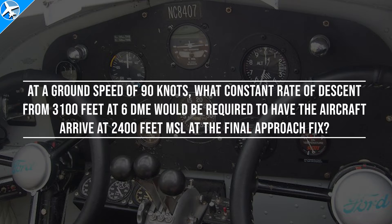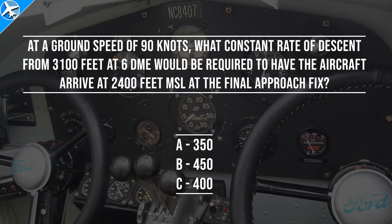At a ground speed of 90 knots, what constant rate of descent from 3,100 feet at 6 DME would be required to have the aircraft arrive at 2,400 feet MSL at the final approach fix? Taking a look at the possible answers, we're given 350, 450, and 400 feet per minute.